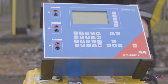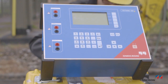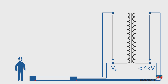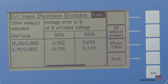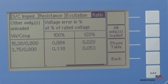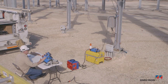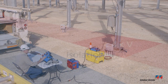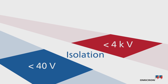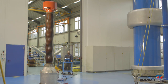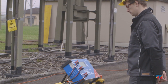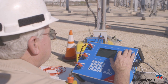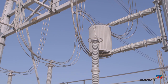Omicron's Votano 100 uses a modeling approach. The modeling approach allows the accuracy to be verified by determining the elements of the voltage transformer's equivalent circuit, and subsequently calculating the error. This approach increases the safety level of the personnel and reduces the amount of effort required in factories, labs, and on site. Votano 100 has made testing voltage transformers economically feasible for many operators.